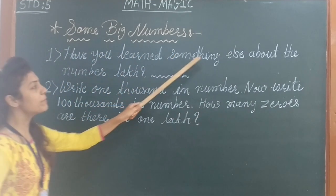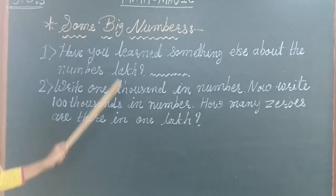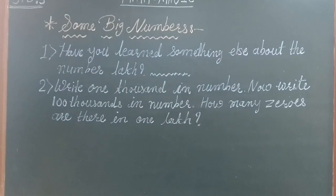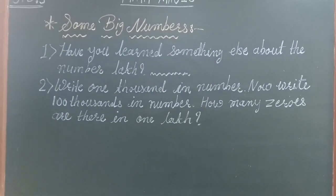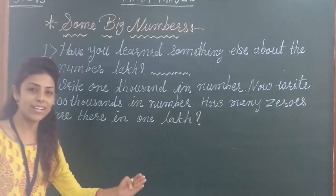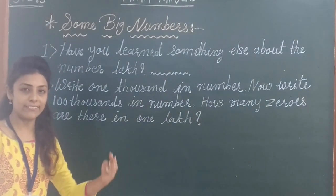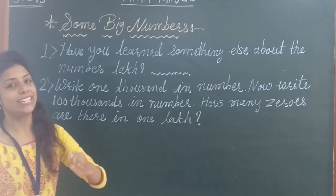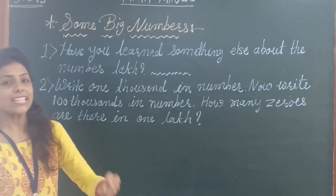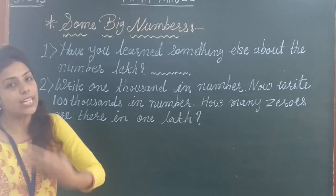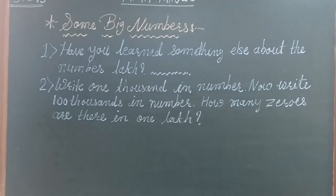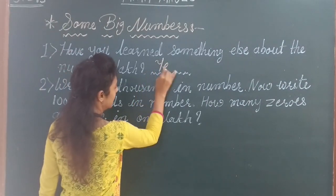Have you learnt something else about numbers? Yes, you learnt in first standard about place value. The place value — you learnt ones, tens, hundreds, thousands, then ten thousands, lakhs, ten lakhs. These places you already learnt in third and fourth standard. So yes, you have learnt the number class.